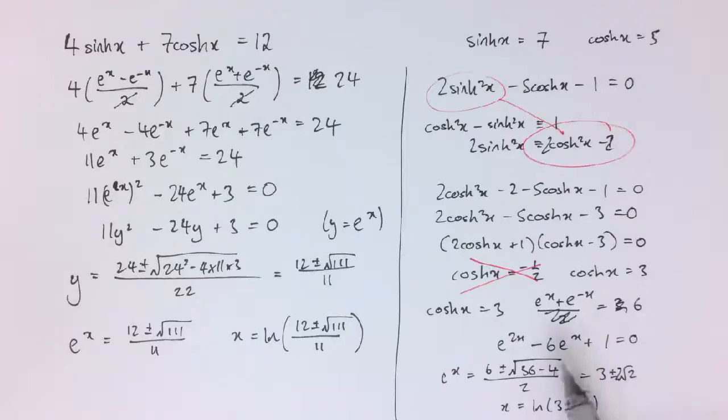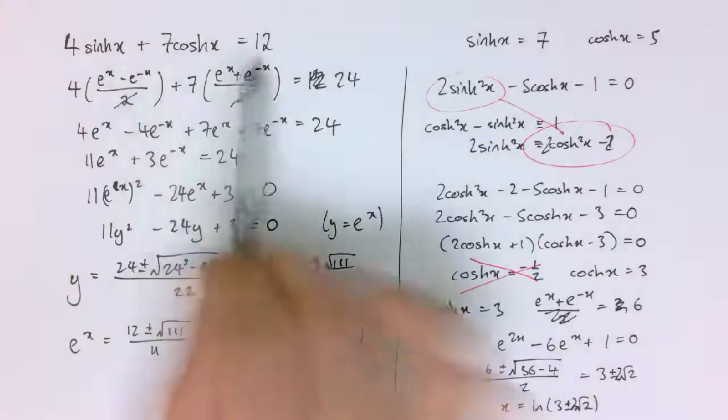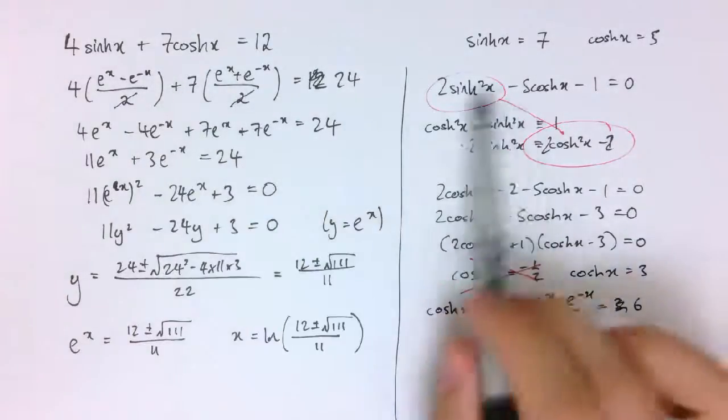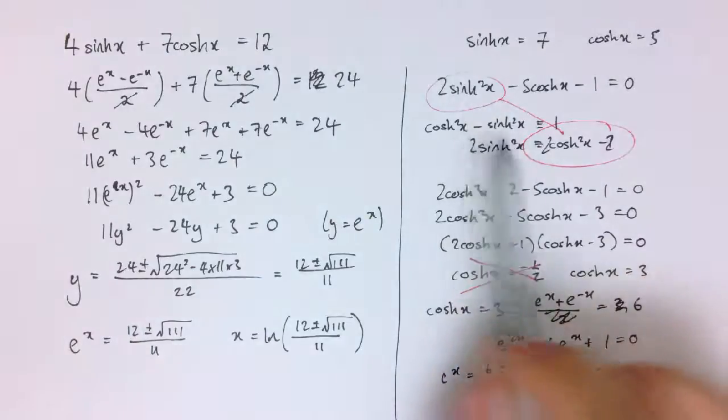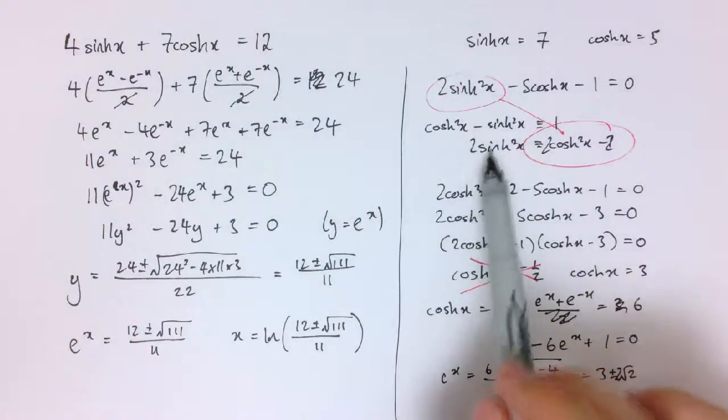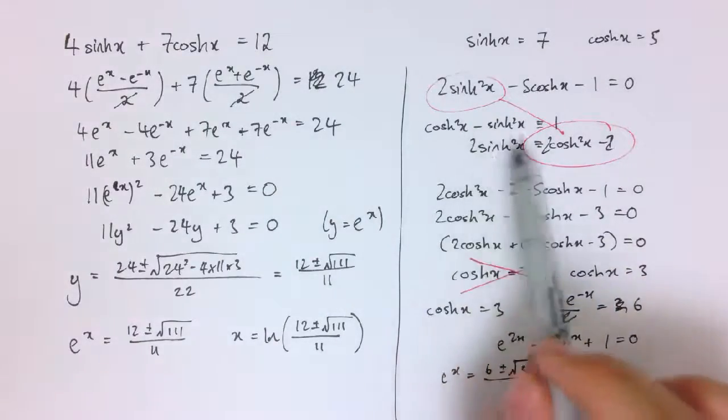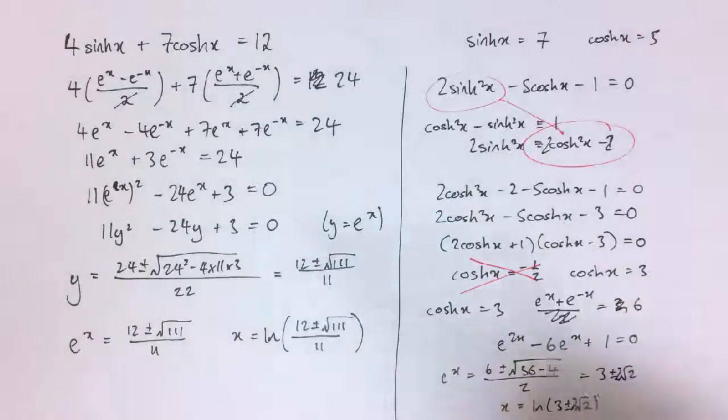But there we go, different types of equations involving cosh. So we've got something like this where we can just use the exponential form directly, or something like this where we might use the identity cosh² minus sinh² equals 1. Either way we're looking for a quadratic we can solve. And here we have to do a bit more work, here we finish at that point. But a quadratic in e^x or cosh(x) or sinh(x) or something like that, and then work from there.